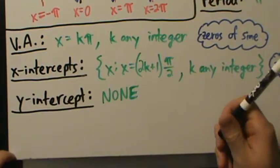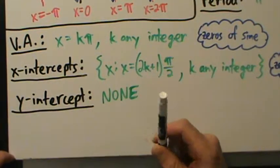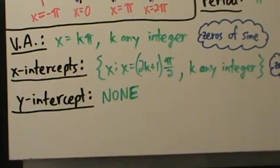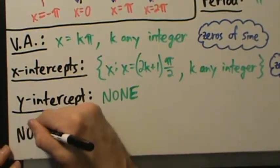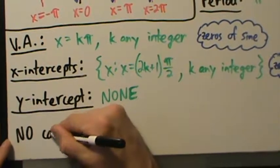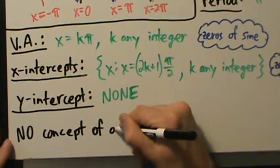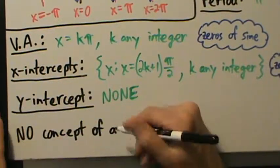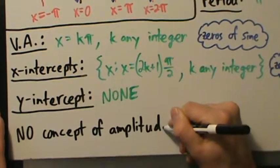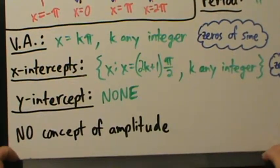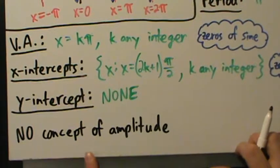So to recap so far: domain, range, period, vertical asymptotes, x-intercepts, and y-intercepts — there is none. It's also worth mentioning that, just like with the tangent graph, there is no concept of amplitude here. Amplitude applies to sines and cosines — wavy type functions. It does not make sense to talk about amplitude with tangents, cotangents, secants, or cosecants.